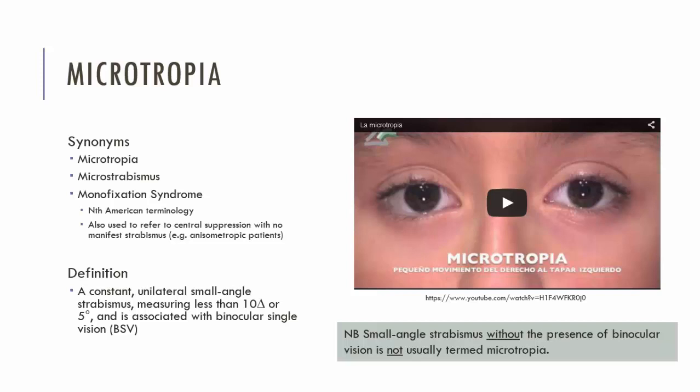Because it's such a small angle, it's usually not easily observed. To pick up that a child has a microtropia, we often need a screening program to detect that there is strabismus present or there's a reduction in visual acuity, which then leads to a referral and discovery of a microtropia.